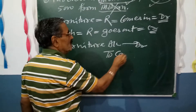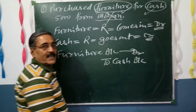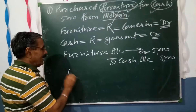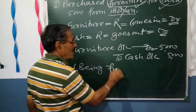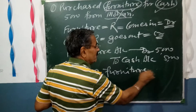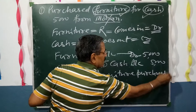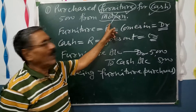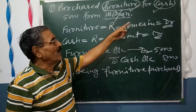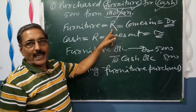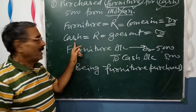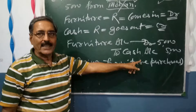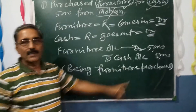After getting the respective debit and credit, the entry is ready: Furniture Account debit, to Cash Account — amount ₹5000. Narration: being furniture purchased. To recap: furniture belongs to real account, comes in so debit; cash is real account, goes out so credit. Entry: Furniture Account debit to Cash Account, narration being furniture purchased.